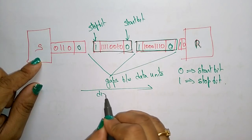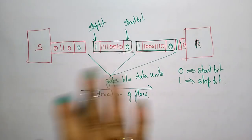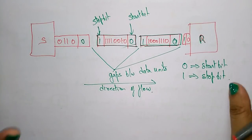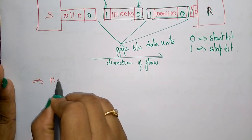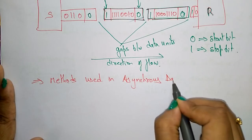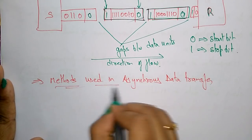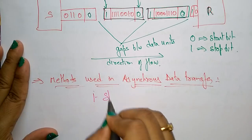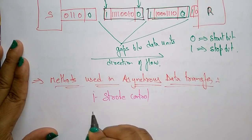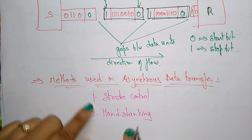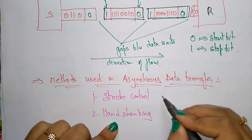Now, coming to the different methods used in asynchronous data transfer. Two types of techniques are used based on signals before data transmission: one is strobe control and the other is handshaking. These are the two different methods used in asynchronous data transmission.